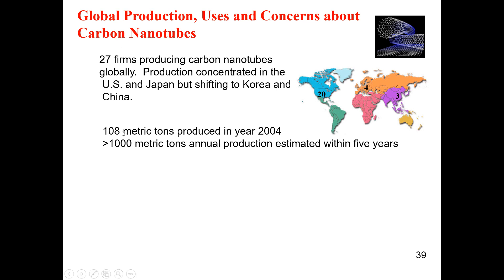About 108 metric tons of carbon nanotubes were produced in the year 2004, and that number was estimated to grow to greater than 1000 metric tons annual production within the next five years. This estimate was made in 2004, projecting that by around 2009–2010 production would exceed 1000 metric tons per year.